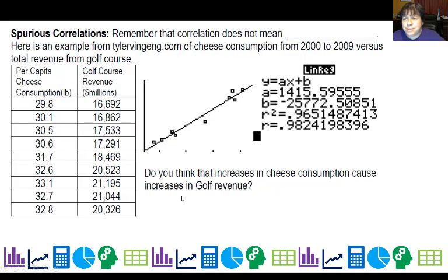Now, last but not least, one of the main things we want to make sure you learn in stats is that correlation does not mean causation. And one of my students shared with me this wonderful website, tylervingen.com. I even bought the book. And here's an interesting graph. He has cheese consumption from 2000 to 2009 versus total revenue from the golf course. So I actually went and I looked up the data from his website. And I put it in and I did a linear regression. And here's the equation. 14, 15 times cheese consumption minus this amount gives me golf revenue in millions.